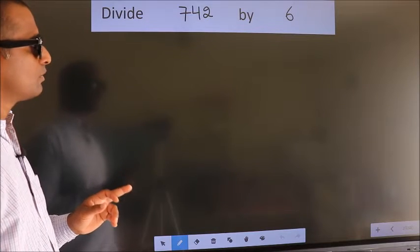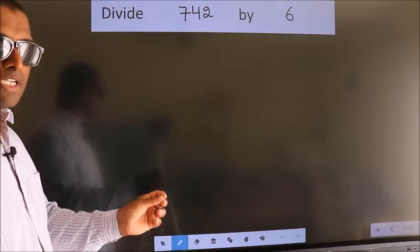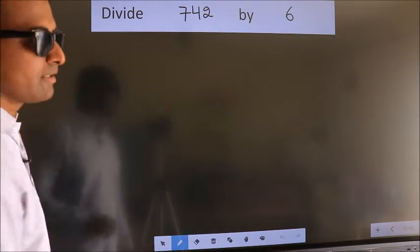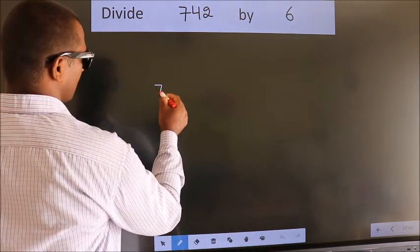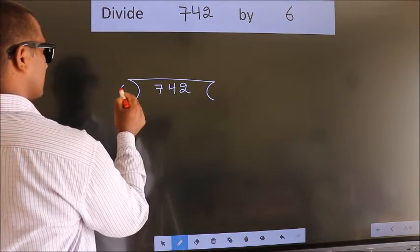Divide 742 by 6. To do this division, we should frame it in this way: 742 here, 6 here.